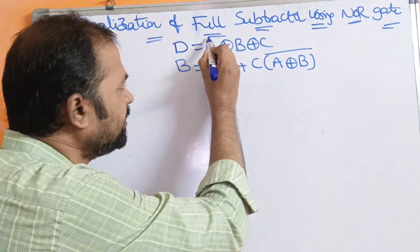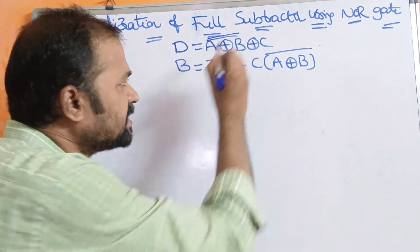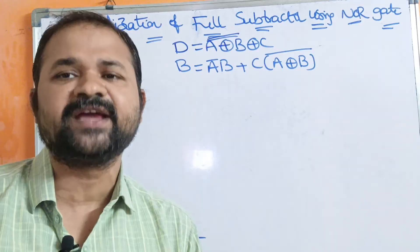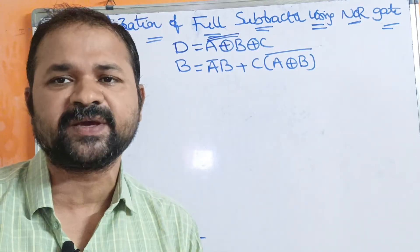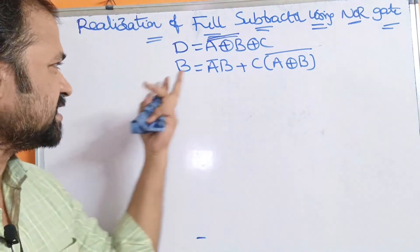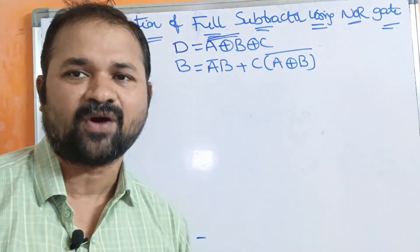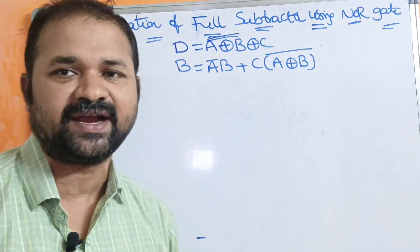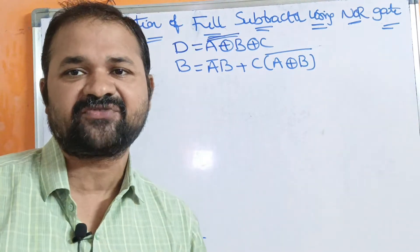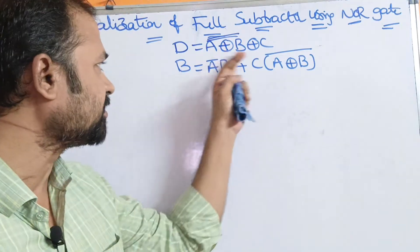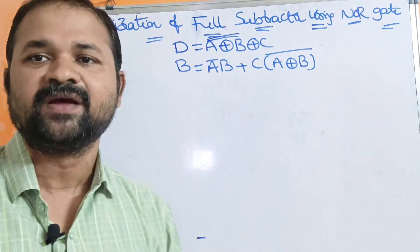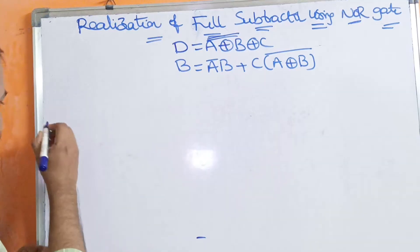First, let us try to implement A XOR B. In order to implement A XOR B, we require 5 NOR gates — just like in half subtractor, half adder, and full adder implementations using NOR gates. We require 5 NOR gates in order to implement A XOR B. Let us follow that structure.